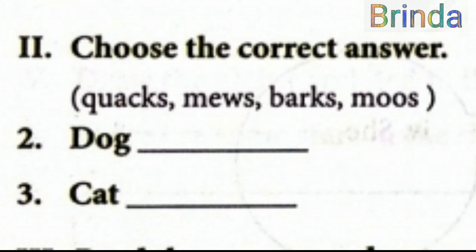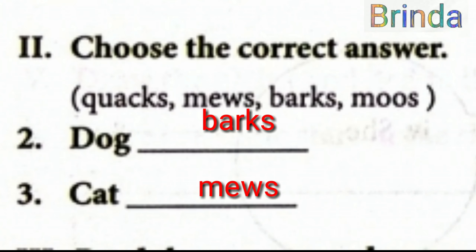Second Roman number: choose the correct answer. So you have the options: quacks, mews, barks, moos. The second one — dog. Dog barks.